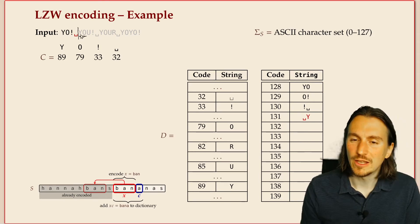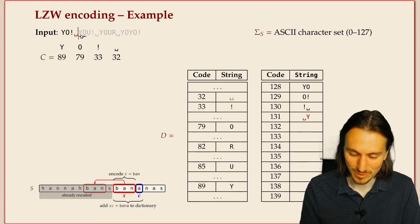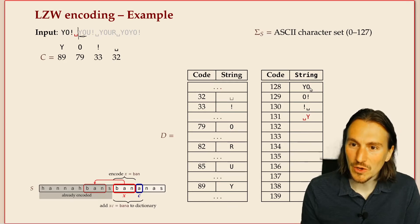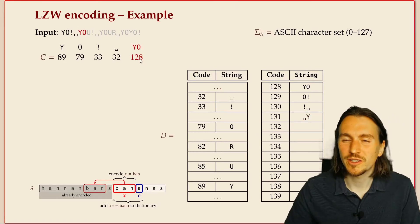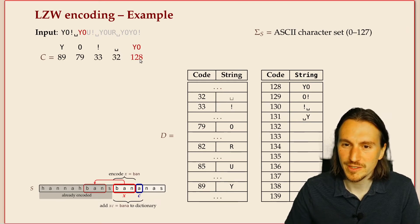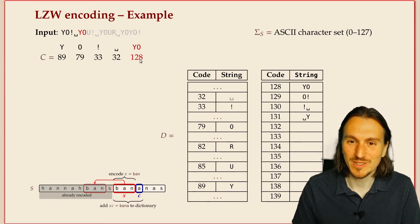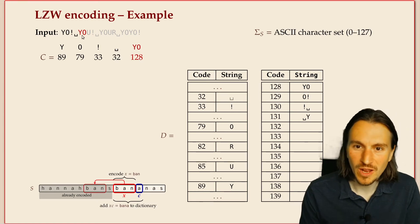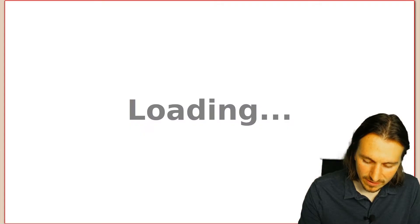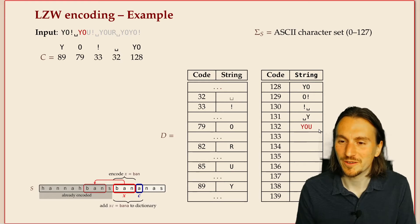Now things start to get more interesting, because we've actually seen 'yo' before. At this position, we want the longest match in the dictionary, and that is indeed 'yo'. So here we use the new code word that stands for 'yo' — a phrase we didn't initially have in the dictionary but which is a substring of our text. We store this phrase representing those two characters, and add 'you' to the dictionary since 'u' is the next character.